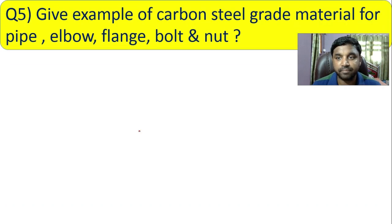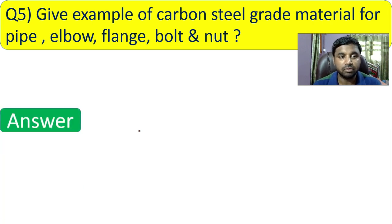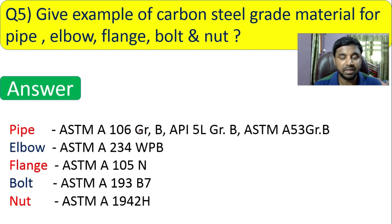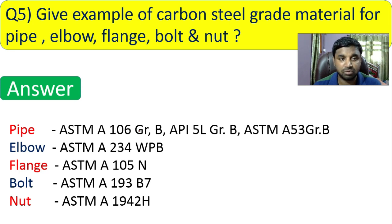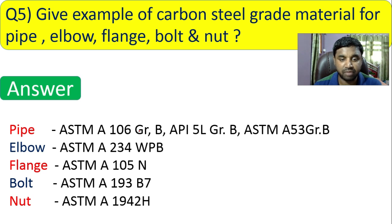Question 5: give examples of carbon steel grade material for pipe, elbow, flange, bolt, and nut. Pipe: ASTM A106 Grade B, API 5L Grade B, ASTM A53 Grade B. Elbow: ASTM A234 WPB. Flange: ASTM A105N. Bolt: ASTM A193 B7. Nut: ASTM A194 2H. You must remember at least one grade for each material.